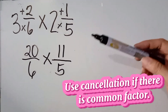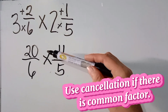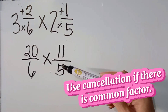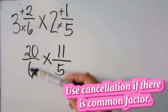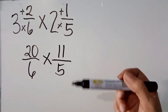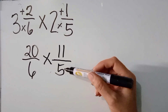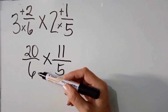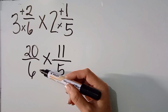Next step is we are going to use cancellation if there is common factor. Pwedeng vertically or diagonally. So, ang 11 over 5 ba, may common factor? Wala po. How about 20 over 6, may common factor ba sila? Yes po, meron silang common factor na 2.